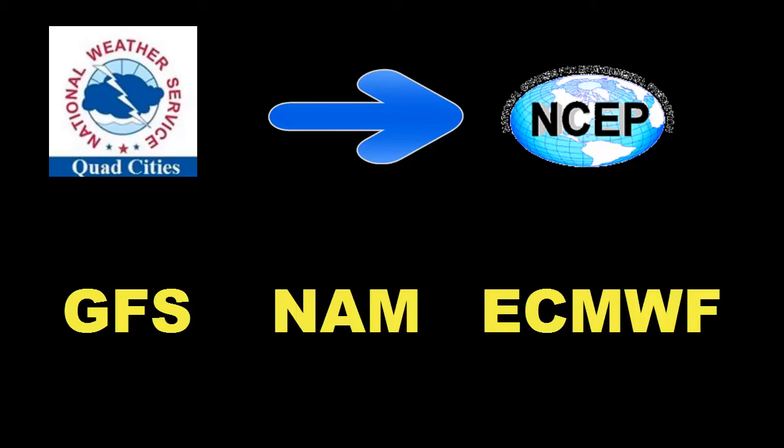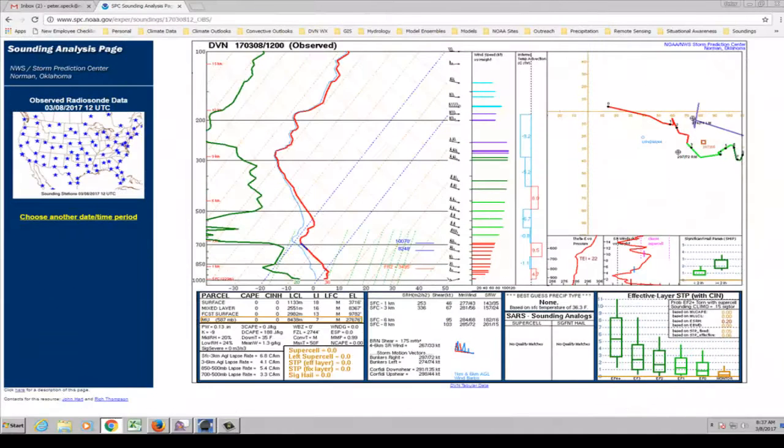Here's an example of what the data looks like. This is all located on the Storm Prediction Center observed sounding page. If you're curious as to what all this means, there's a nice link on the lower left of the page that will provide a nice explanation of the data and calculations.